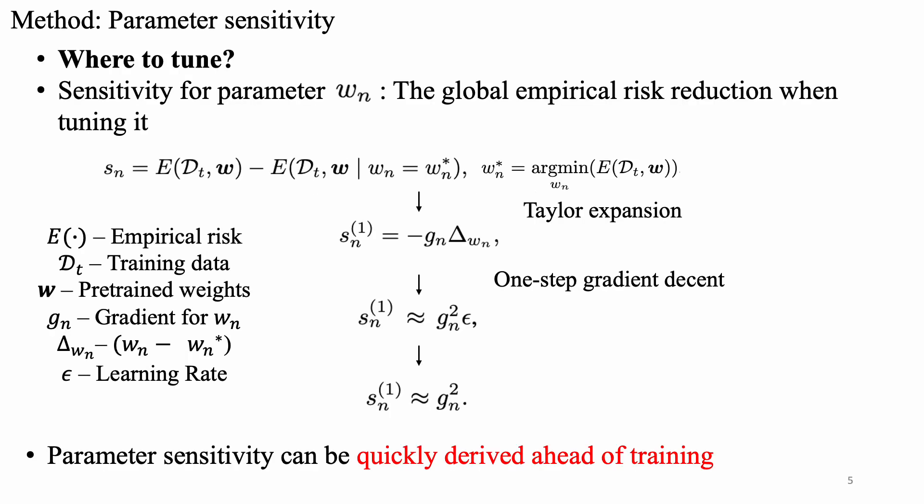To understand where to tune, we model our parameter sensitivity as the global empirical risk reduction when tuning any parameter Wn, and we have the first equation. However, it's impossible to derive the empirical risk individually for all model parameters, so we use the first-order Taylor expansion and have the second equation. The delta Wn term is still very expensive to derive, so we unwrap it with one-step gradient descent and get the third equation. Finally, because we are comparing among all model parameters which share the same learning rate, we can eliminate that learning rate term. The final form of our parameter sensitivity can therefore be quickly derived ahead of training.